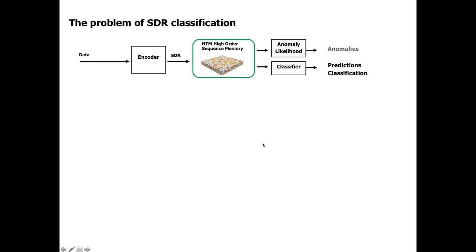For typical use of HTM, there is some streaming data feeding in through an encoder into the sparse distributed representation. The HTM model can learn sequences from the data stream, and we can do a bunch of useful tasks such as anomaly detection, prediction, or classification.